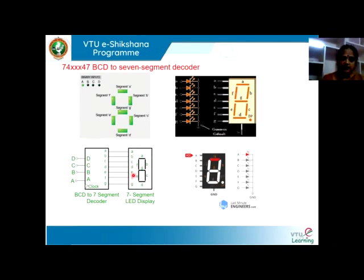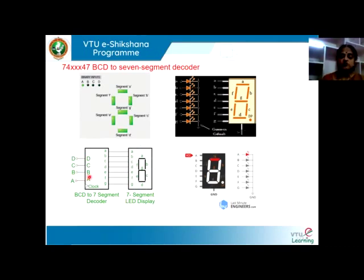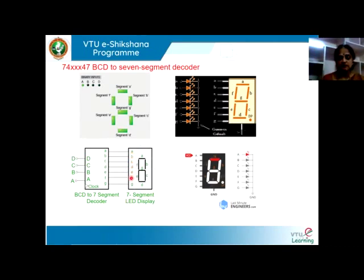When it comes to the connection, the 7-segment display needs 7-segment inputs — one for each segment. But what we typically have is a BCD value. So we need something in between that can convert BCD to 7-segment inputs, which is the BCD to 7-segment decoder. The decoder performs this conversion, and its 7-segment outputs are connected to the A, B, C, D, E, F, G inputs of the 7-segment display.